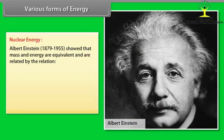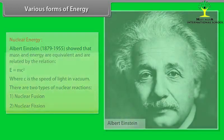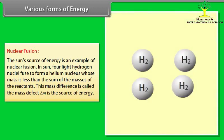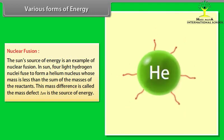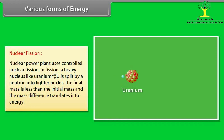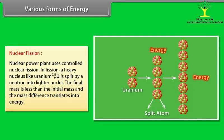Nuclear Energy. Albert Einstein, 1879-1955, showed that mass and energy are equivalent and are related by the relation E = mc². Where c is the speed of light in vacuum. There are two types of nuclear reactions: nuclear fusion and nuclear fission reactions. Nuclear fusion: The sun's source of energy is an example of nuclear fusion. In sun, four light hydrogen nuclei fuse to form a helium nucleus, whose mass is less than the sum of the masses of the reactants. This mass difference is called the mass defect. Δm is the source of energy. Nuclear fission: Nuclear power plant uses controlled nuclear fission. In fission, a heavy nucleus like uranium-235-92 is split by a neutron into lighter nuclei. The final mass is less than the initial mass and the mass difference translates into energy.